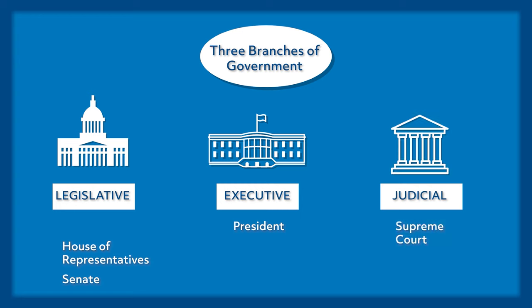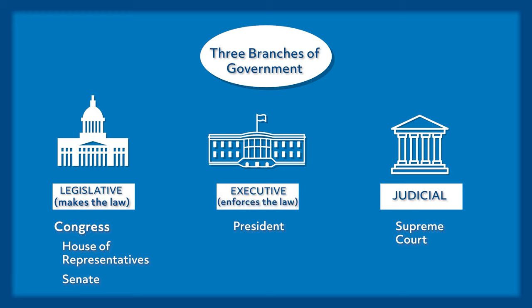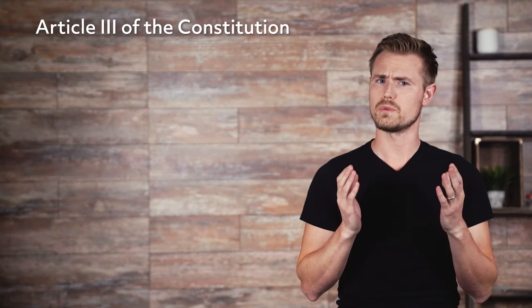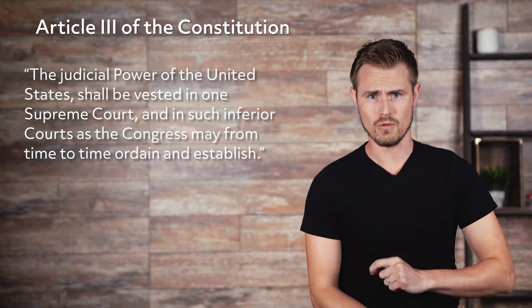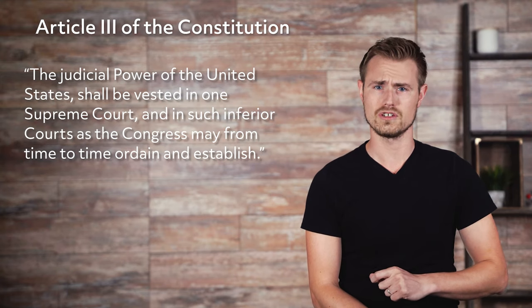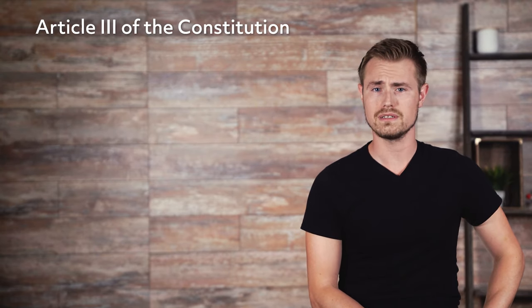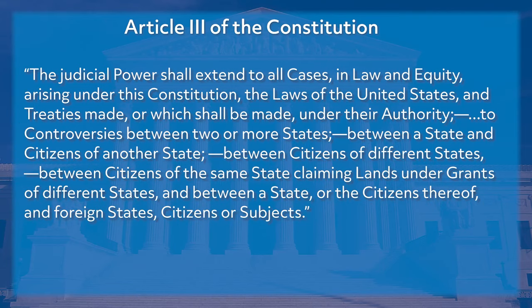According to the Constitution, the legislative branch, known as Congress when referring to both houses, is responsible for writing the laws. The executive is responsible for enforcing them, and the judicial branch is responsible for helping interpret the laws and how they should be enforced. Article 3 of the Constitution established the judicial branch: 'The judicial power of the United States shall be vested in one Supreme Court and in such inferior courts as the Congress may from time to time ordain and establish.' The judicial power shall extend to all cases in law and equity arising under this Constitution, the laws of the United States, and treaties made or which shall be made under their authority.